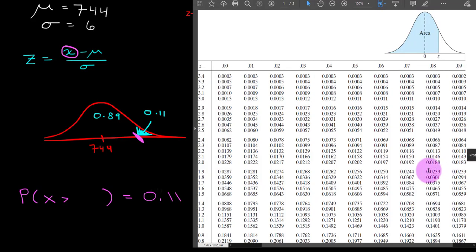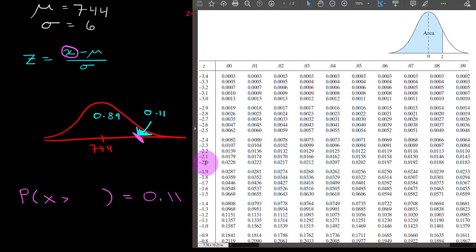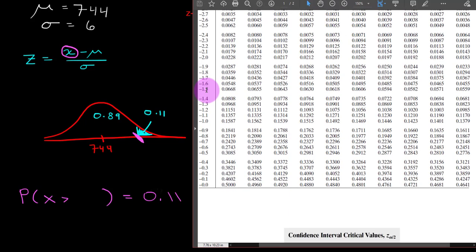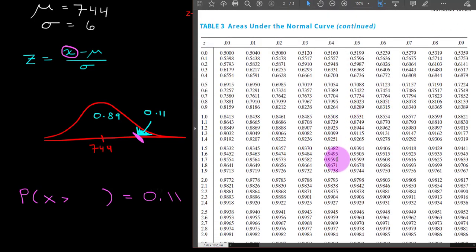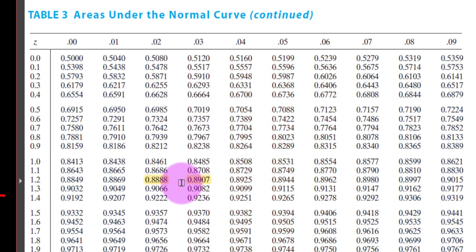So here is our z-score table, and right now it's on the negative side. We want to go over to the side that contains positive z-scores and find as close as we can to 0.89. Now I'm looking, and I have found a couple of candidates right here. These are the two values. One is slightly above and one is slightly below 0.89. But certainly the one on the right side is just a hair closer.